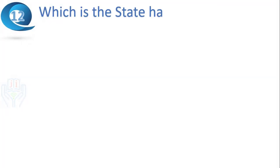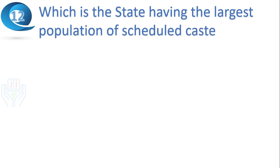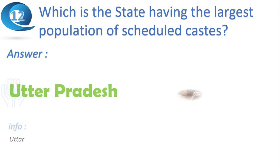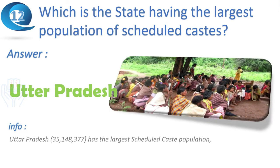Next question: which is the state having the largest population of scheduled castes? Answer: Uttar Pradesh. It has the largest scheduled castes population, followed by West Bengal and Bihar.